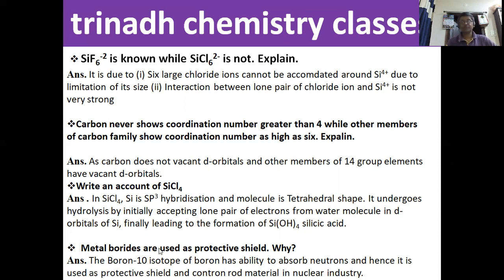The next question: metal borides are used as a protective shield. This is from Group 13 elements. In metal borides, boron has two isotopes: B-10 and B-11. The B-10 isotope of boron has the ability to absorb neutrons, and hence it is used as a protective shield and control rod material in the nuclear industry.